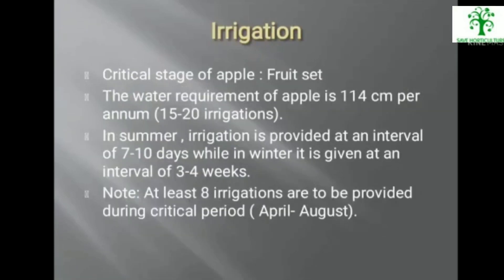The critical stage of apple for irrigation is fruit set. The water requirement of apple is 114 cm per annum, which equals 15 to 20 irrigations. In summer, irrigation is provided at an interval of 7 to 10 days, while in winter it is given at an interval of 3 to 4 weeks. At least 8 irrigations are to be provided during the critical period.